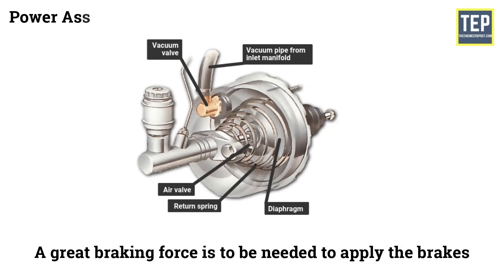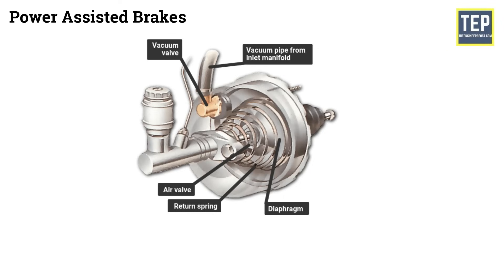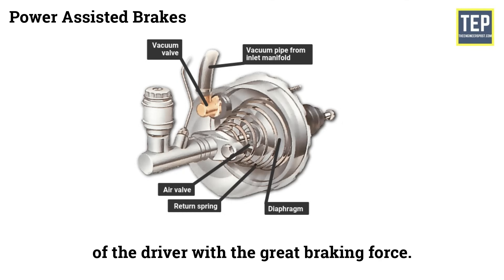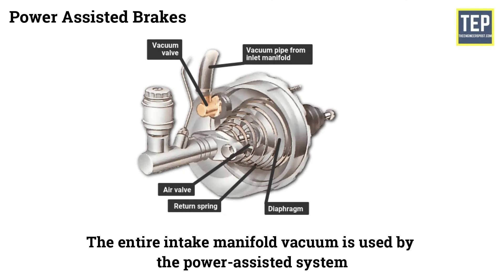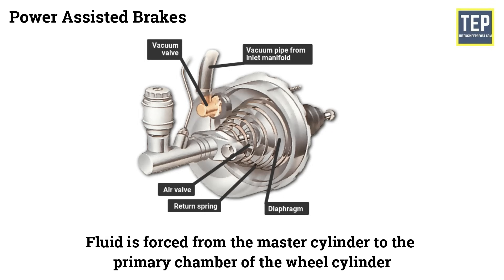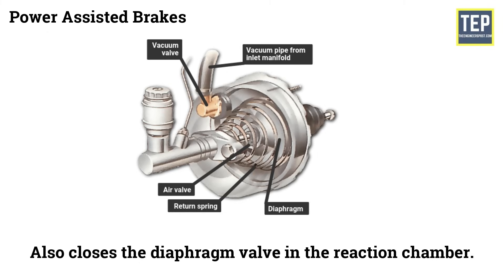Power assisted brakes. A great braking force is needed to apply the brakes in motor vehicles fitted with disc brakes, as well as for heavy commercial vehicles. Power assisted brakes are used to equate the limited strength of the driver with the great braking force required. Generally, the entire intake manifold vacuum is used by the power assisted system, and therefore they are also known as vacuum brakes. In this system, when the brake pedal is depressed, fluid is forced from the master cylinder to the primary chamber of the wheel cylinder. The intermediate piston at the end of the master cylinder also closes the diaphragm valve in the reaction chamber.